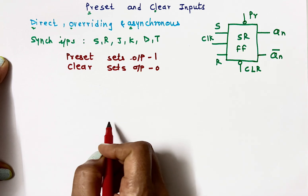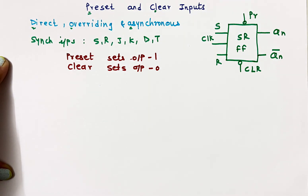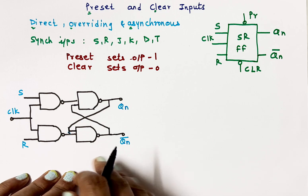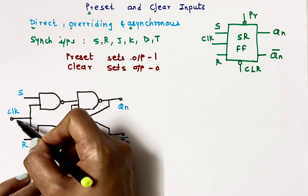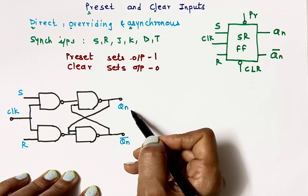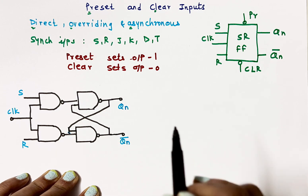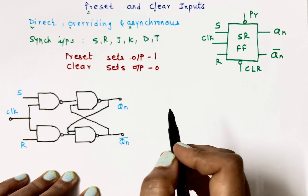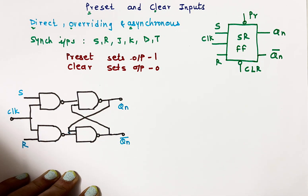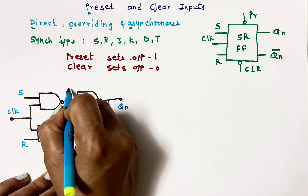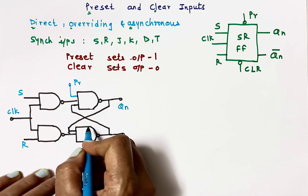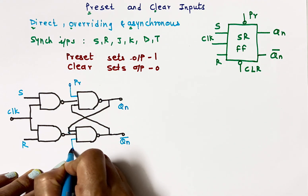Now I'll explain with the NAND gate diagram of the SR flip-flop. This SR flip-flop has inputs S, R, and Clock, and the SR latch generates two outputs Qn and Qn-bar. We connect preset here and clear here — these are separate connections with no connection between the two points.